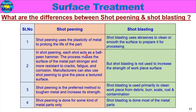In shot peening, each shot acts as a ball-peen hammer. The process makes the surface of the metal part stronger and more resistant to cracks, fatigue, and corrosion. Manufacturers can also use shot peening to give the piece a textured surface. Shot blasting, however, is not used to increase the strength of the workpiece surface — it is used to clean the surface. Shot peening is the preferred method to toughen metal and increase its strength.